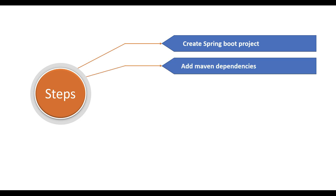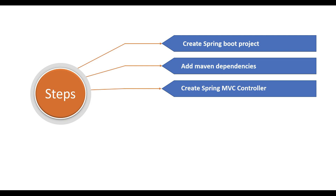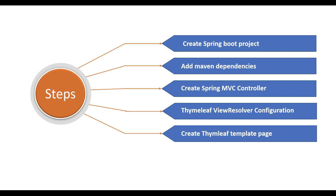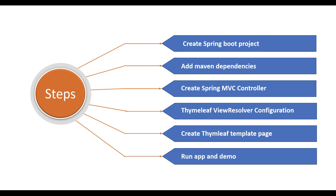As usual, I am going to create this tutorial step by step. First, we create a Spring Boot project and add all the required dependencies. Then we create a simple Spring MVC controller to handle HTTP requests. Next, we will see the Thymeleaf view resolver configuration — whenever Spring Boot finds a Thymeleaf dependency in the classpath, it will automatically configure a view resolver. Then we create a Thymeleaf template page to display data on the browser, and finally we run the application and see the demo.